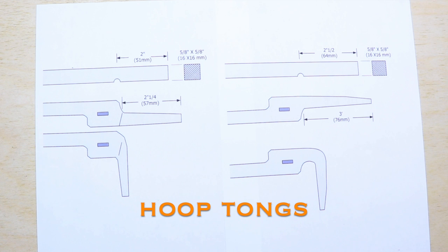Hoop tongs are bent flat bit tongs that are used to hold flat bar sitting across the face of the jaws. They're not complicated to make, but you do have to pay attention to how the reins are oriented when you're bending the jaws.